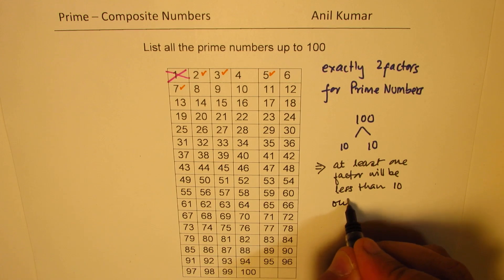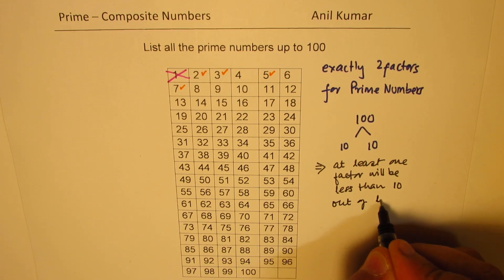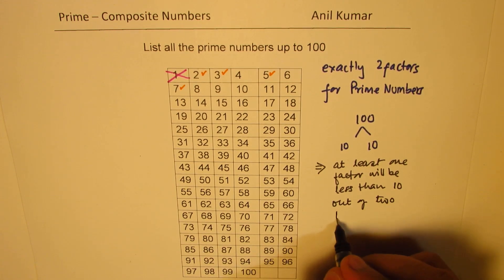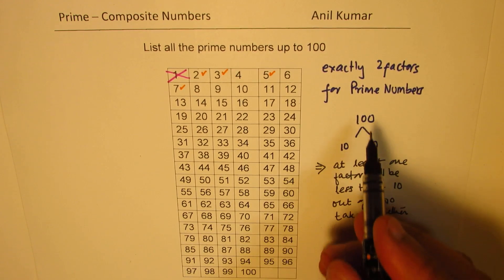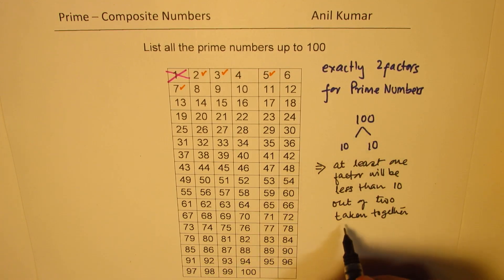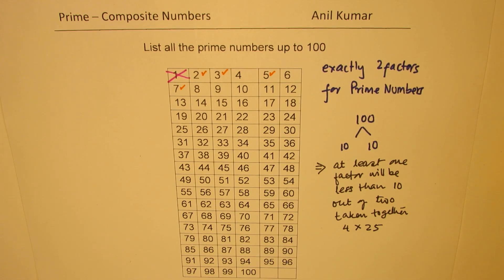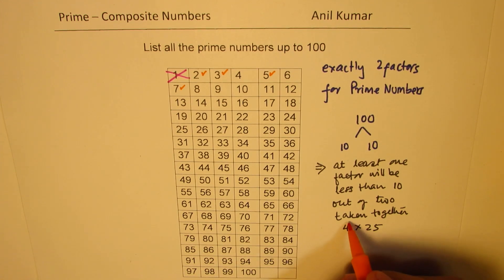Out of 2 multiplied, out of 2 taken together. What I mean to say is, that we know if I write 100, I could write 100 as, let's say 4 times 25. So in this we know that one of the factors is less than 10.